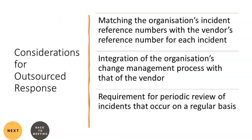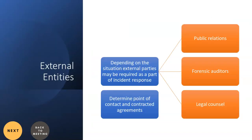If a third party is hired for incident management and response, additional processes are needed: a process to match the organization's internal incident reference number with the vendor's reference number; a process for integrating the organization's change management process with the vendor's; and a periodic review process for incidents occurring on a regular basis. We must also identify external parties such as public relations agencies, forensic investigators, and legal persons, document their points of contact, and establish contractual agreements with them in advance.